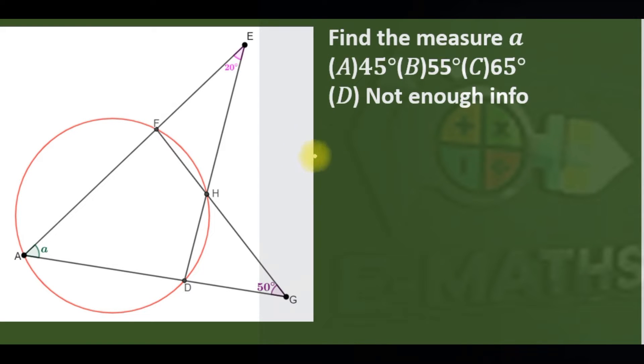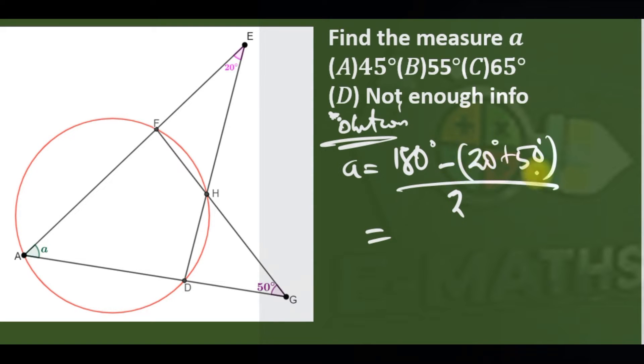Okay, we are asked to find the measure of angle a given the diagram. Without wasting time, a is equal to 180 minus the sum of these given angles, which is 20 plus 58, divided by 2. So angle a is 70... 110 over 2 is 55, so the answer is B.